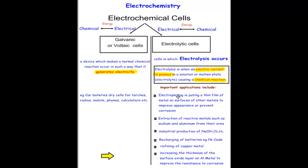Let's look at some examples where they can be applied to. Electroplating, that is you put a thin film of metal on the surfaces of other metals to improve its appearance or to prevent corrosion. The other important application is extraction of reactive metals such as aluminium and sodium from their ore.